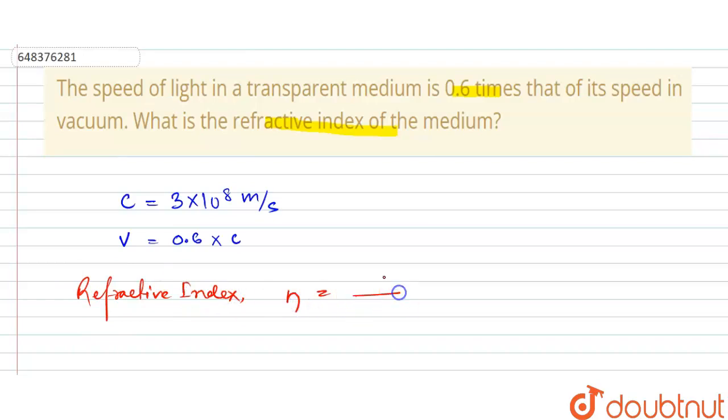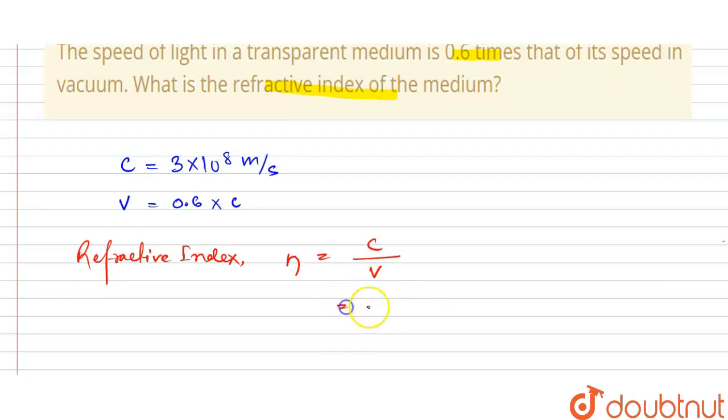index is equal to speed of light in vacuum upon speed of light in medium. That is c upon v. We can put the value of v here: 0.6 × c. And c and c will be cancelled. It will be 1 upon 0.6.